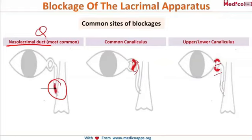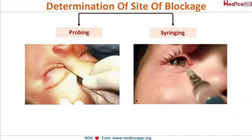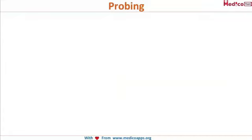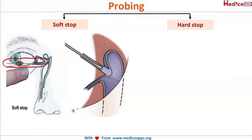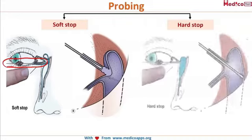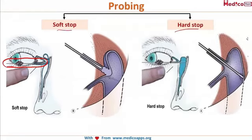How will you determine the site of the block when a patient presents with watering of the eye? There are two tests: the probing test and the syringing test. For probing, you insert a lacrimal probe through the punctum into the canaliculi to find out where the block is. You can encounter two types of stops: a soft stop or a hard stop.